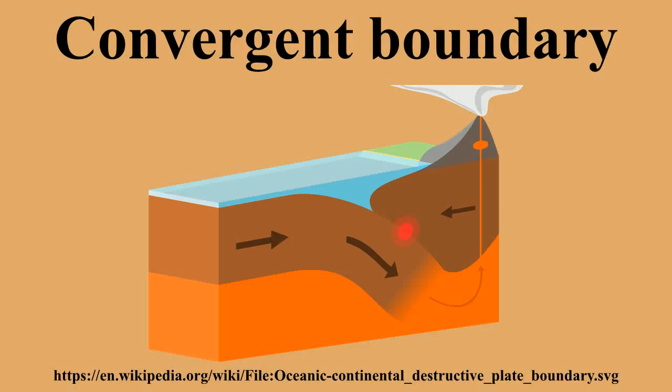Where two continental plates collide, the plates either buckle and compress or one plate delves — called subduction — under the other. Either action will create extensive mountain ranges. The most dramatic effect seen is where the northern margin of the Indian plate is being thrust under a portion of the Eurasian plate, lifting it and creating the Himalayas and the Tibetan Plateau beyond. It may have also pushed nearby parts of the Asian continent aside to the east.